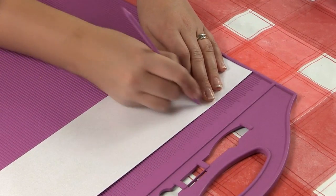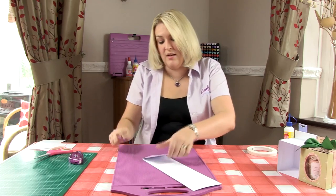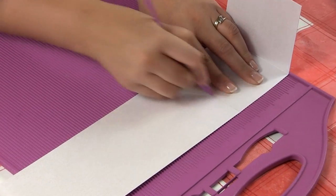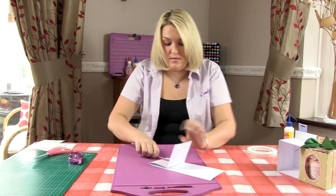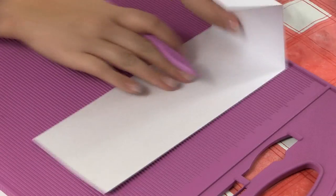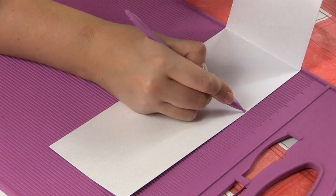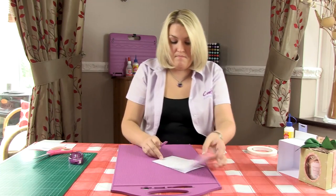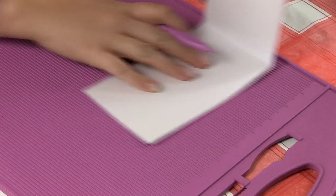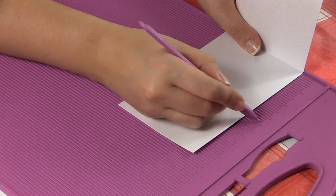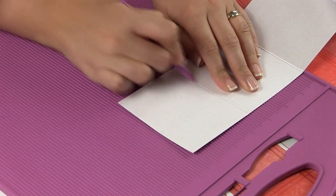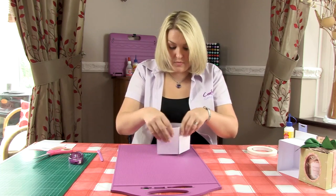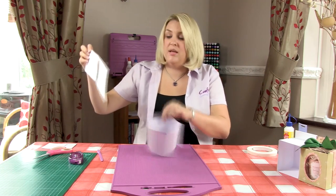We're going to score at three and three eighths of an inch - just one before three and a half to make it easier. I'm going to fold, burnish it, pop it on again. Three and three eighths, three and three eighths, three and three eighths. You'll see you've got that little bit left over which becomes your gluing flap at the back.